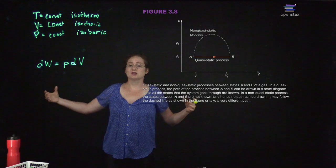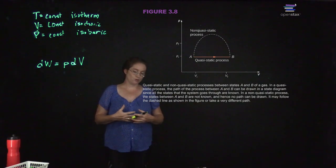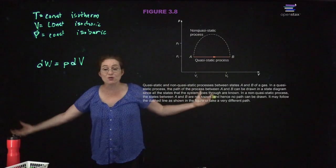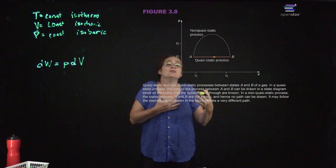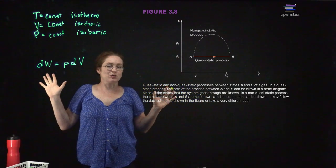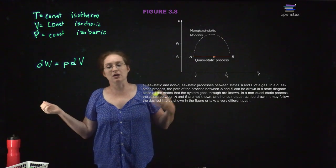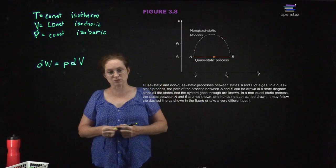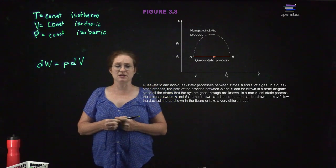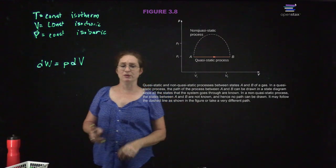If you have some expansion, you can imagine allowing a volume of gas to expand so fast that the gas doesn't actually have time to reach the pressure it would have at equilibrium — that's not the case we're considering. We're considering that you're going slowly enough that the system reaches equilibrium. If you have a non-quasi-static process, you don't know the states traveled — you don't know what path you take between A and B.